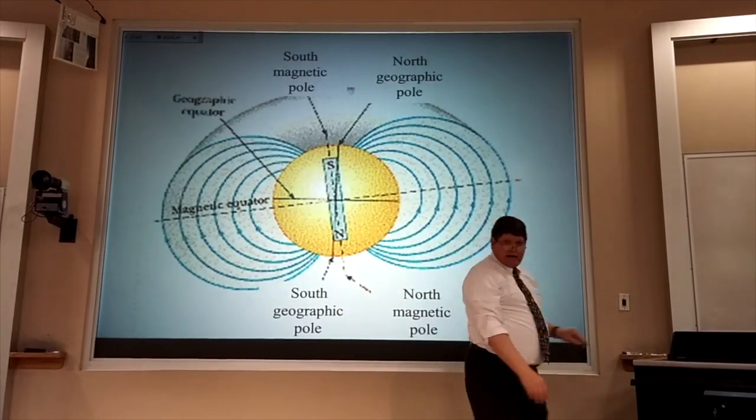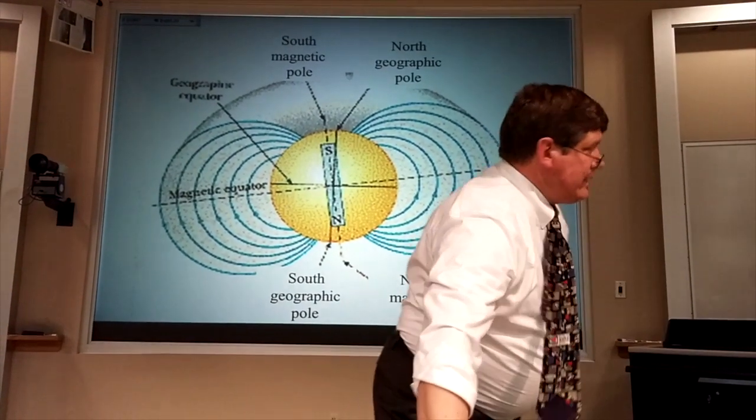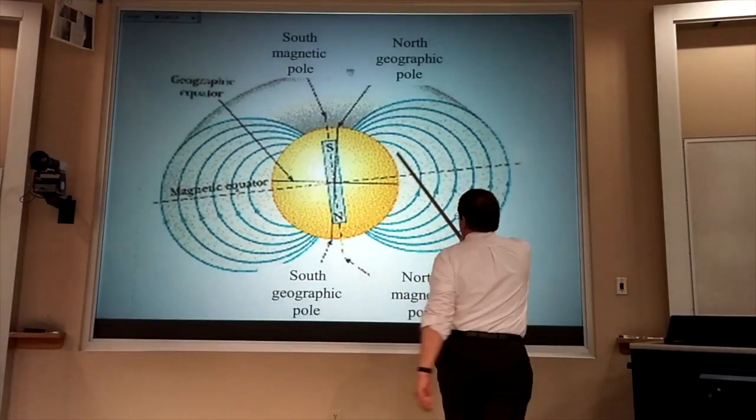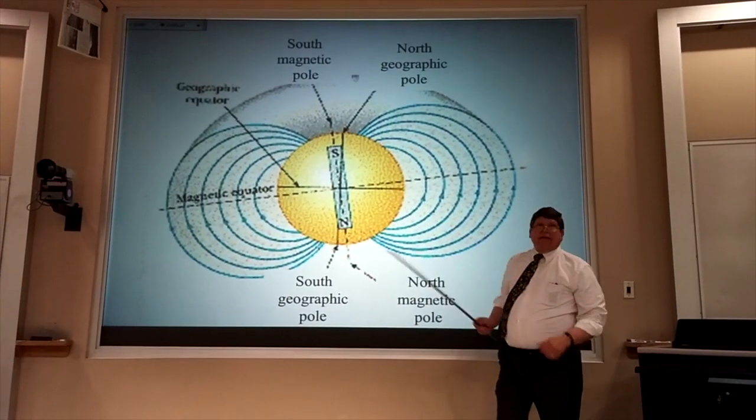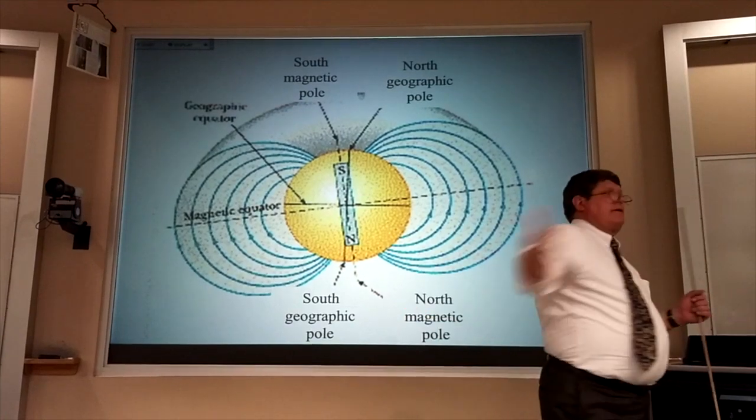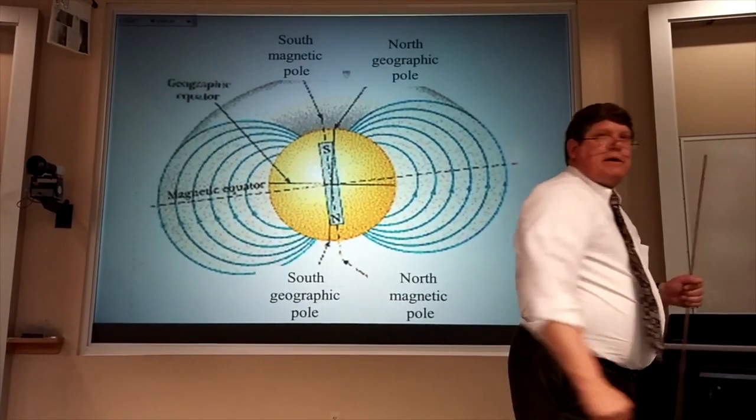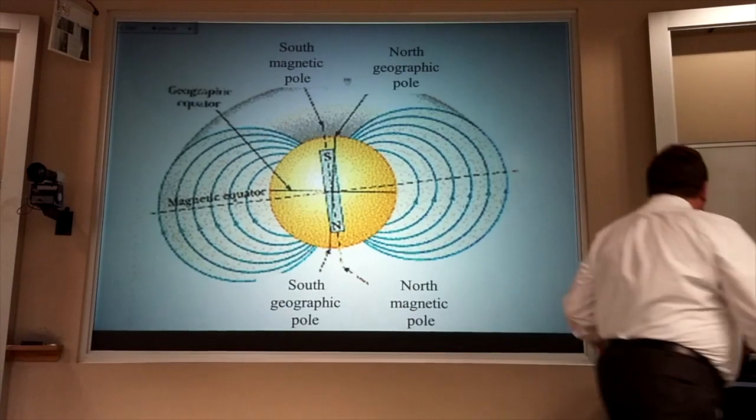Now, you'll notice that we don't live very far from Canada, and that's why the field lines here point down about 70 degrees.